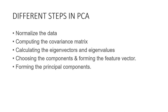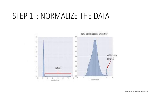These are all the different steps we need to follow in Principal Component Analysis: normalize the data, compute the covariance matrix, calculate the eigenvectors and eigenvalues, choose the components and form the feature vector, and finally form the principal components. Let's start with step one — normalizing the data.